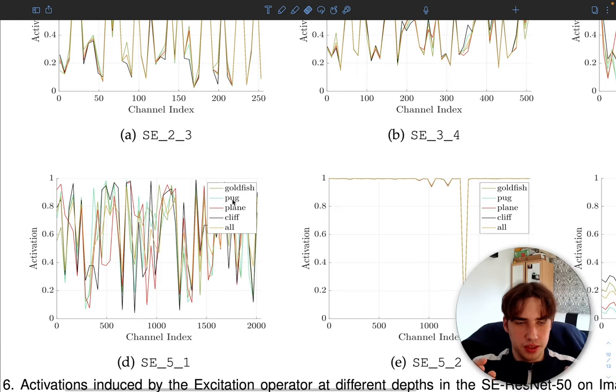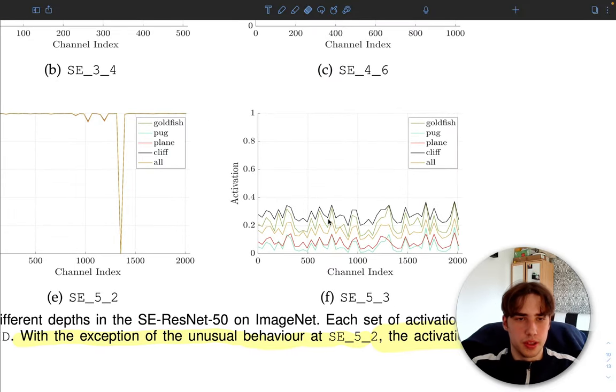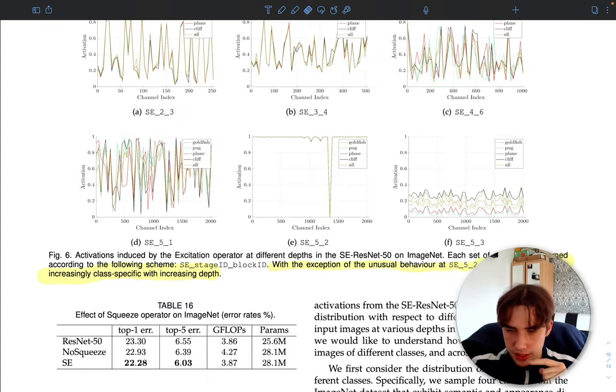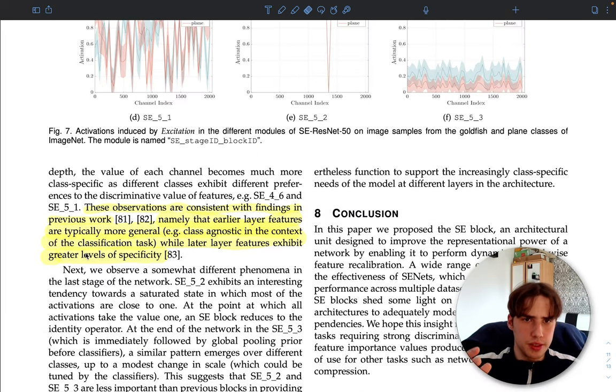When we go even deeper, so it's stage five, this activation really varies for different classes, and that's what proves basically the idea of separate weights for each channel, basically the relevance of each channel. In this one you can actually see that the activations are different for different classes - for example, in this case cliff has much higher activation than the plane for this channel, for this feature. In the last one, different classes have different activation patterns. They say with the exception of unusual behavior at stage five, the activations become increasingly class-specific with increasing depth. That's basically what this paper is all about.